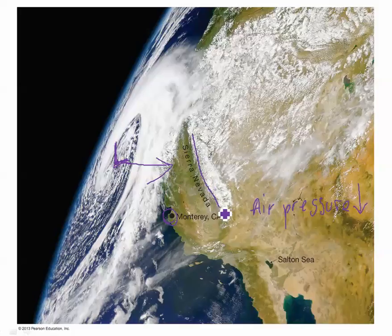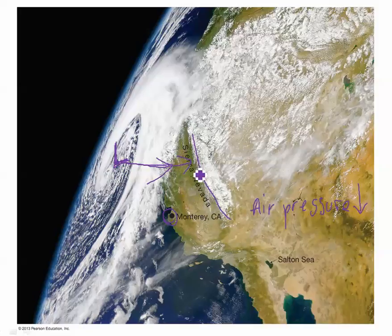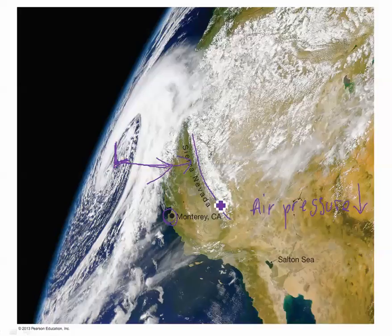We can see snow here in the Sierra Nevada mountains as this moist air has moved in across the continent and hit this mountain range. What happened to it? It gets pushed up. That air cools adiabatically, and we end up with precipitation. So some precipitation has fallen over this region because of that moist air moving in, getting pushed up by the mountain range, and causing precipitation at those higher elevations.